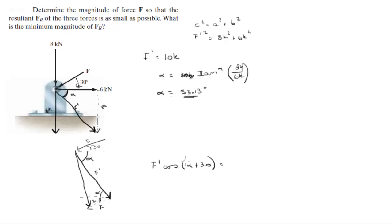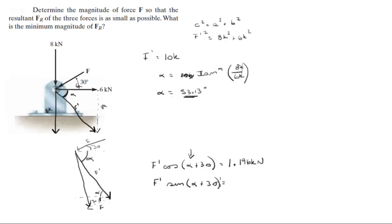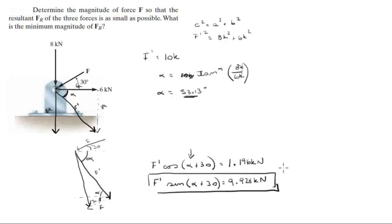To find this force, all we need to do is F prime cosine of the angle plus 30 — we plug it in and we get that the answer is 1.196 kilonewtons. Now for the resultant force, it's pretty easy: F prime sine of this angle, and this gives you 9.928 kilonewtons. This is the easiest way of doing this problem.